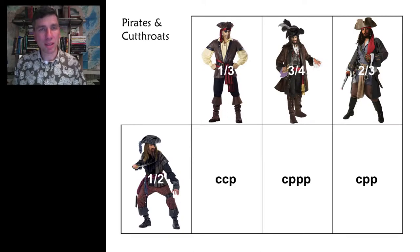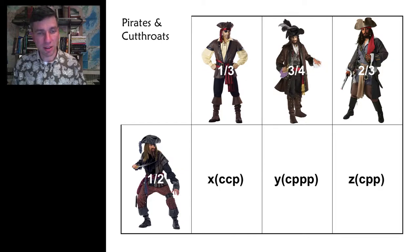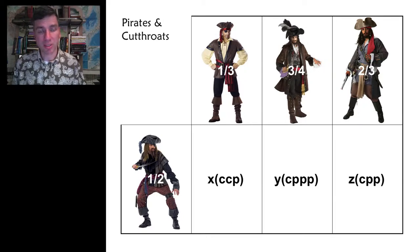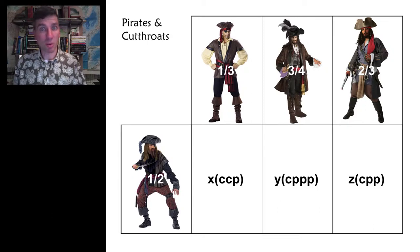How can we solve this? One way is to use algebra. We could say there are X copies of CCP, Y copies of CPPP, and Z copies of CPP. That will always satisfy the requirements of the rooms. For example, if X equals 2, that room holds 4 cutthroats and 2 pirates — still one-third pirate. If X equals 5, that's 10 cutthroats and 5 pirates — still one-third pirate. This use of algebra lets us preserve the room conditions and experiment to make the overall jail satisfy the requirement that one-half are pirates and one-half cutthroats.